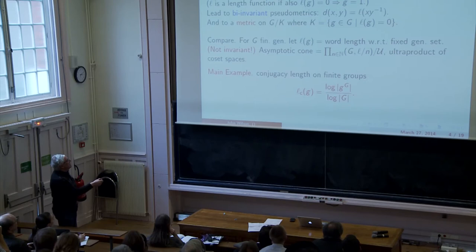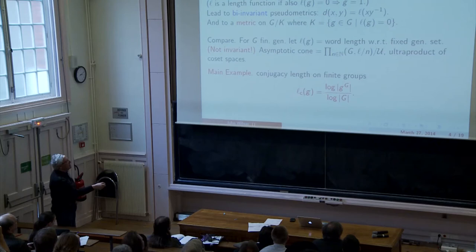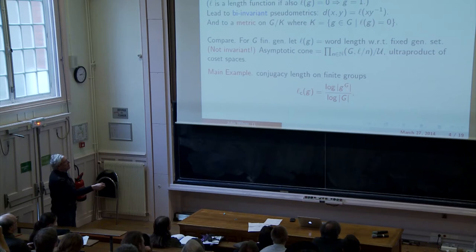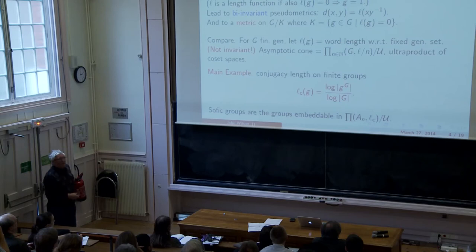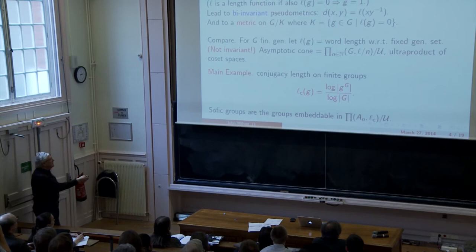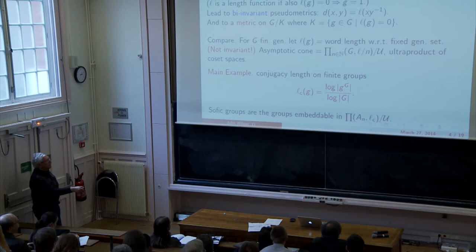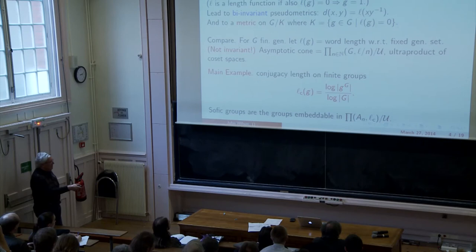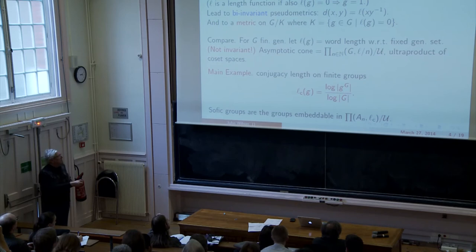So the main example then is conjugacy length on finite groups, and it's defined like this. It's the log of the size of a conjugacy class, the conjugacy class of the element in question, divided by the log of the order of the group. And just to remind you that this might be of interest, sophic groups are precisely the groups embeddable in the ultraproducts of alternating groups with respect to conjugacy metric. This is the non-epsilon delta way of talking about sophic groups.